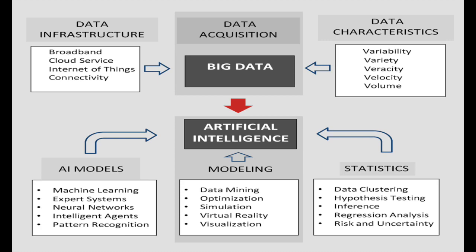The first component is data infrastructure, which includes broadband, cloud services, internet, and connectivity. Then data acquisition — that means big data. Next, data characteristics — that means the five V's of big data. Then artificial intelligence connects big data with different AI models: machine learning, expert systems, neural networks, intelligent agents, and pattern recognition. Modeling includes data mining, optimization, simulation, virtual reality, and visualization. Statistics includes data clustering, hypothesis testing, inference, regression analysis, risk, and uncertainties.